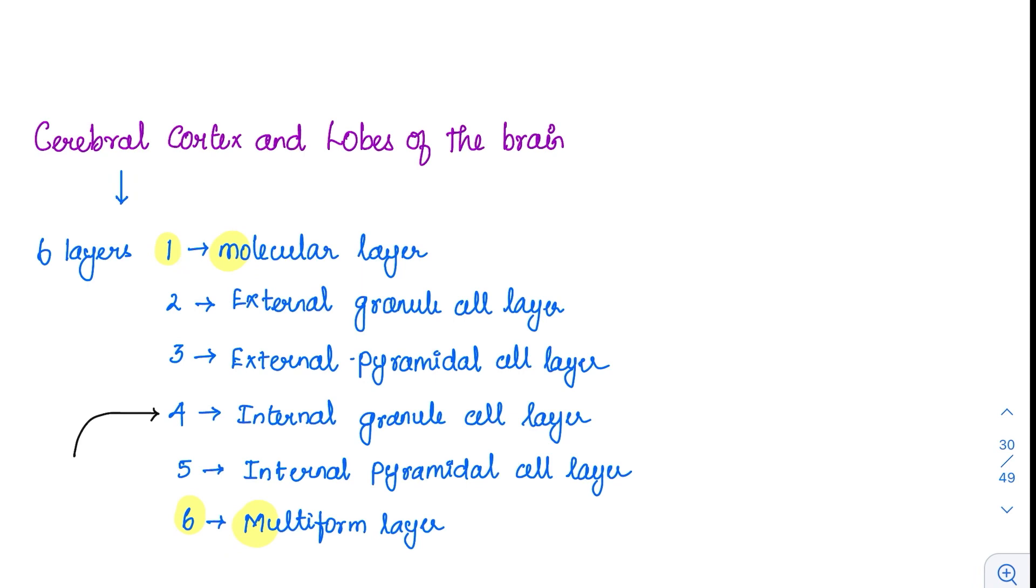The first layer is called the molecular layer and the last one is called the multiform layer. In between, we have the granular layer and pyramidal layer. There are granule-like substances present during staining, so it's called granular layer, and pyramidal cells are present in some layers. The second layer is external granule cell layer, then external pyramidal cell layer. Then fourth and fifth will be internal granule cell layer and internal pyramidal cell layer.